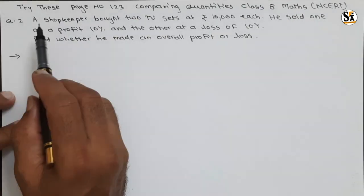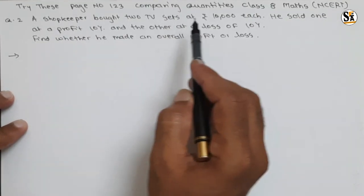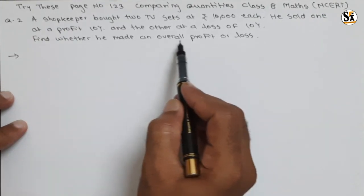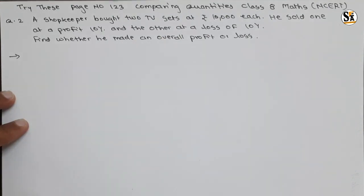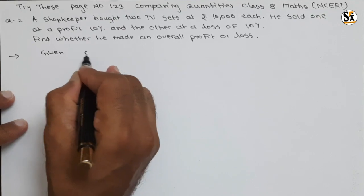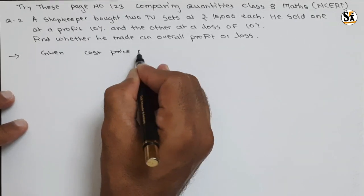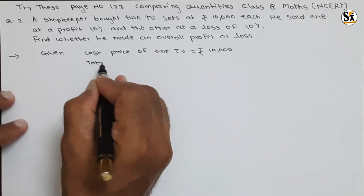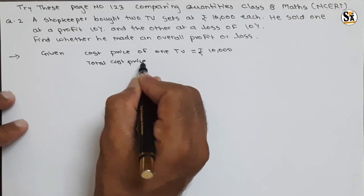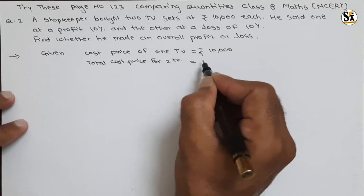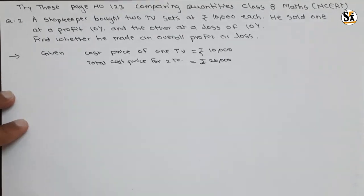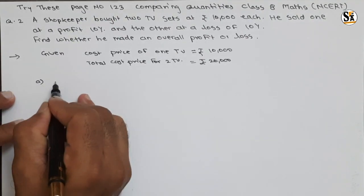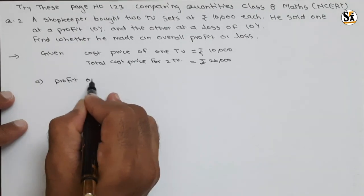The next question: a shopkeeper bought two TV sets at rupees 10,000 each. He sold one at a profit of 10 percent and the other at a loss of 10 percent. Find whether he made an overall profit or loss. Given: cost price of one TV is rupees 10,000, so total cost price for two TVs is rupees 20,000. One TV gives 10 percent profit and the other 10 percent loss.